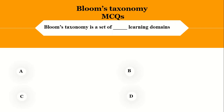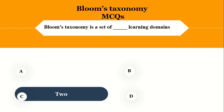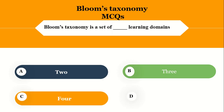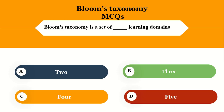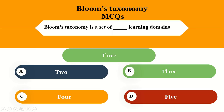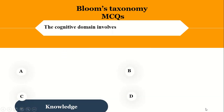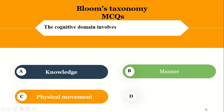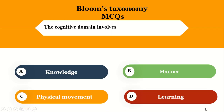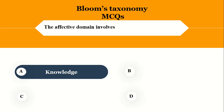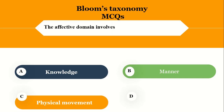Bloom's taxonomy is a set of learning domains. How many learning domains are there? You have four options. The right option is three. Bloom's taxonomy is a set of three learning domains. The first one is cognitive, the second is affective, and the third one is psychomotor domain. The cognitive domain involves knowledge.